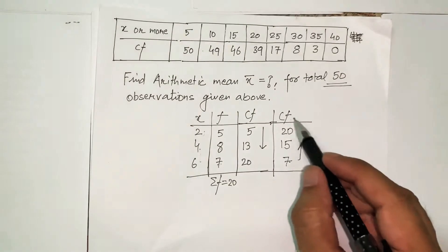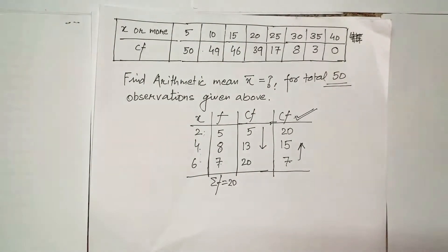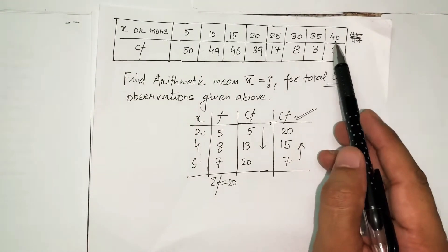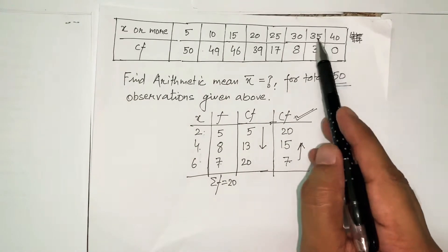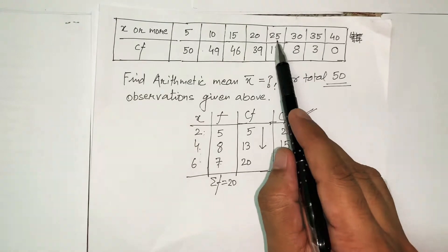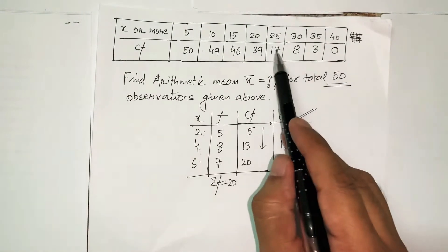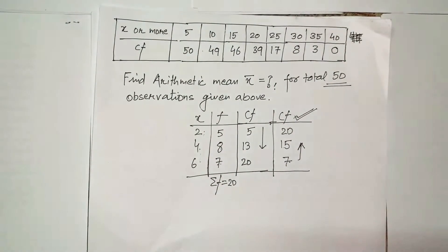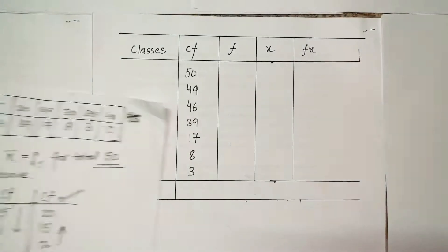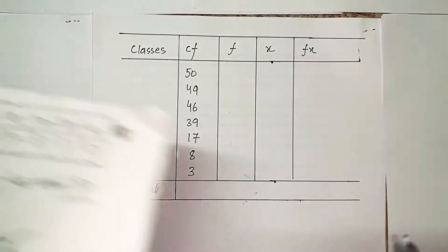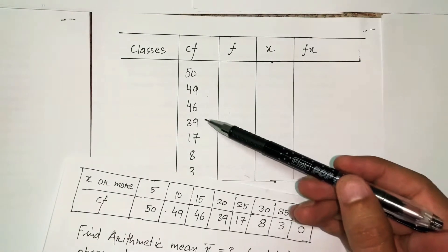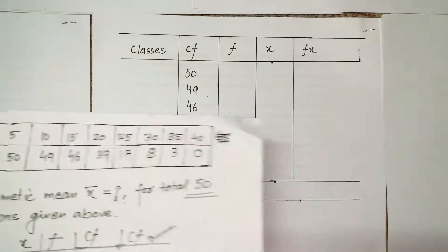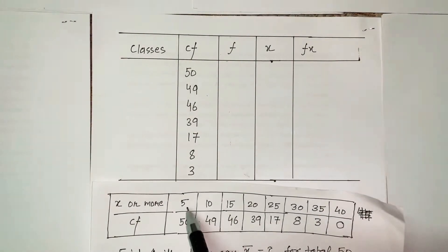In this problem the frequencies are accumulated from bottom to top. For example, 3 is the collective frequency for 35 to 40; 25 from 40 to 25 means the accumulation is 17 from 40 to 20, and the accumulation is 39, and so on. Now let's solve the problem. I have the solution table with cumulative frequencies from the question: 50, 49, 46, 39, 17, 8, 3.